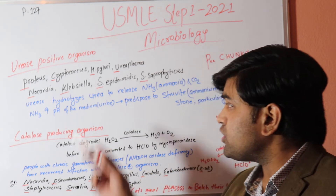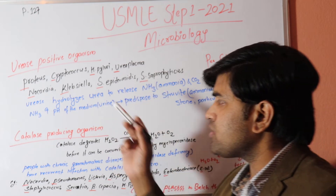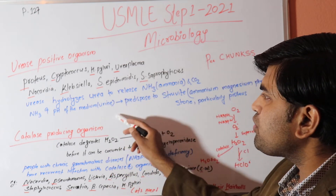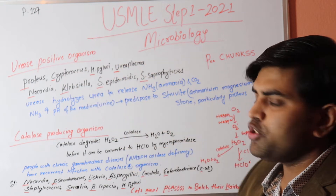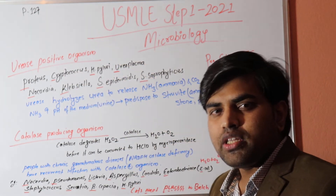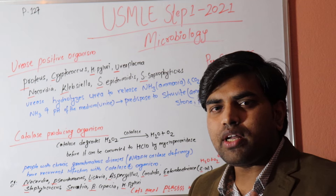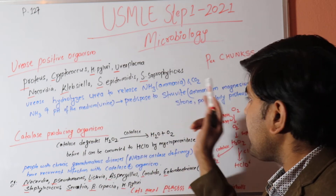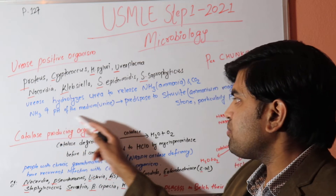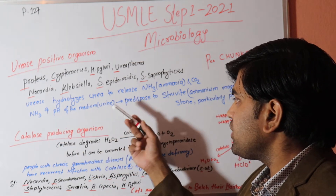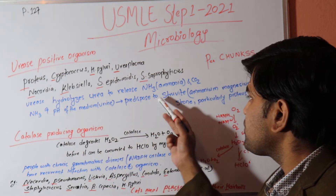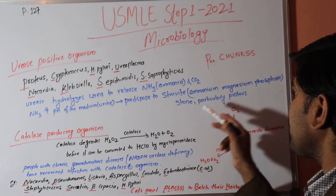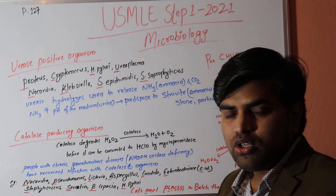Urease-positive organisms possess the enzyme urease. This urease hydrolyzes urea to release ammonia and carbon dioxide. The ammonia increases the pH of the medium — in urine, this leads to the production of struvite stones, which are ammonium magnesium phosphate stones. Proteus is a key example.